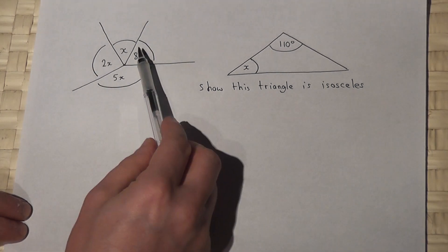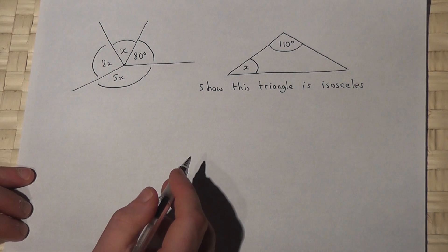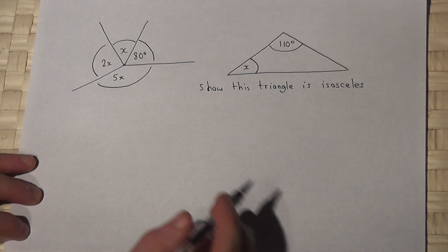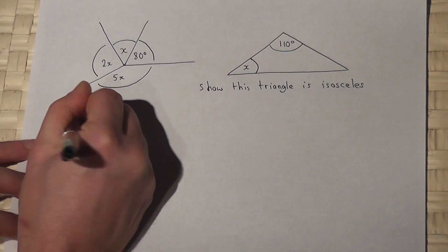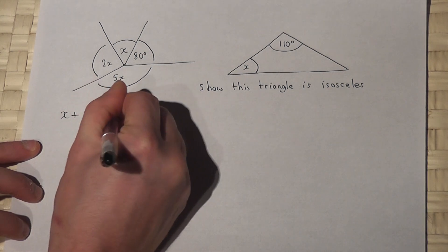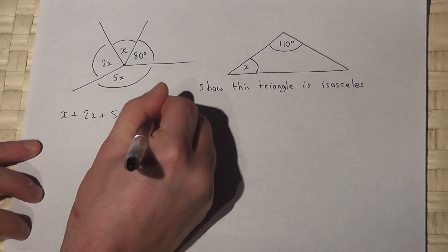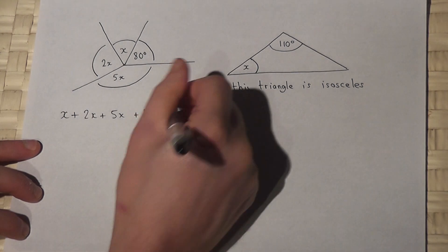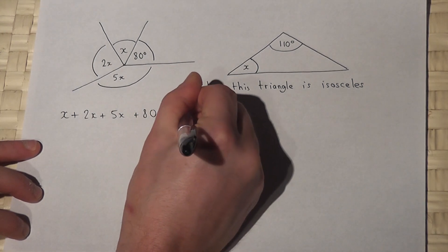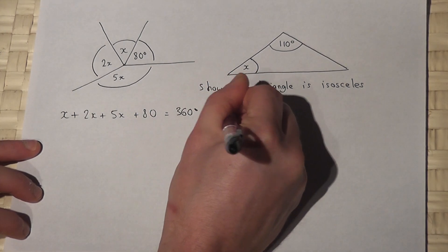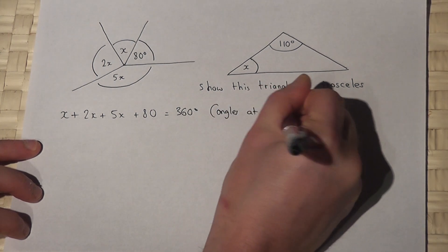Now we know that angles at a point add to 360 degrees. So X plus 2X plus 5X plus 80—those four angles there must add to 360, and that's angles at a point.